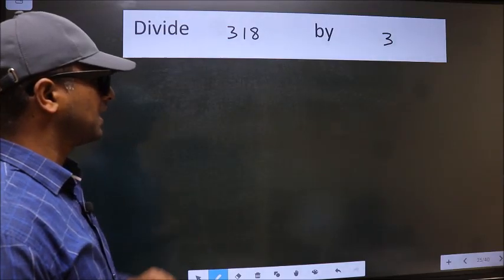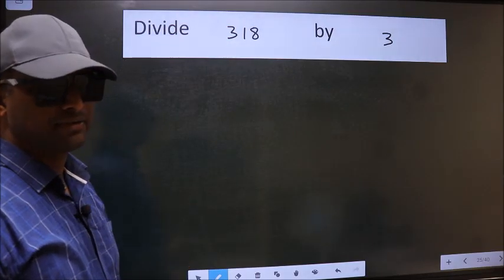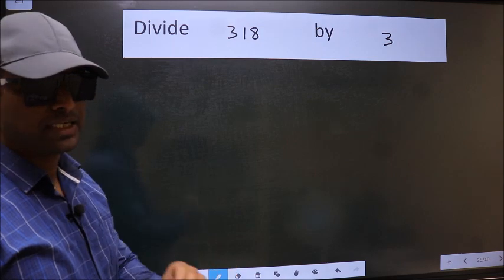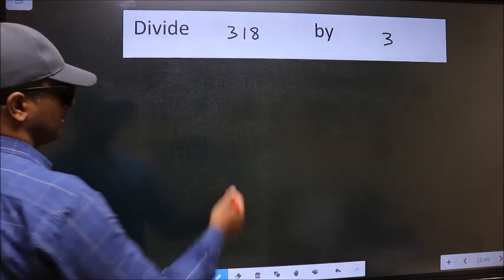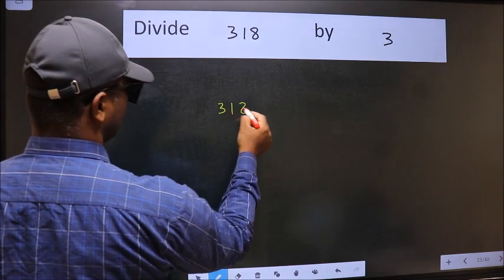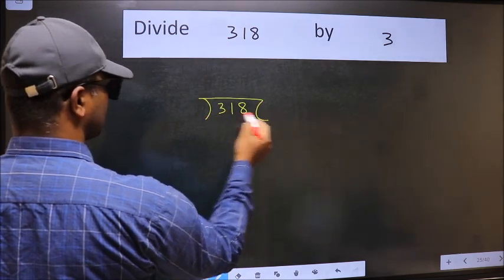Divide 318 by 3. To do this division, we should frame it in this way: 318 and 3 here.